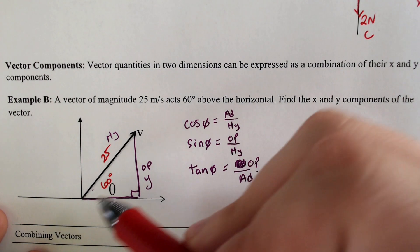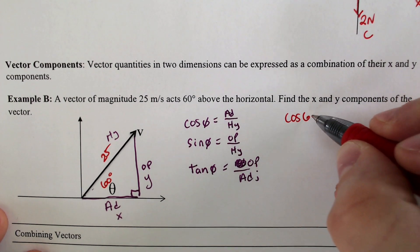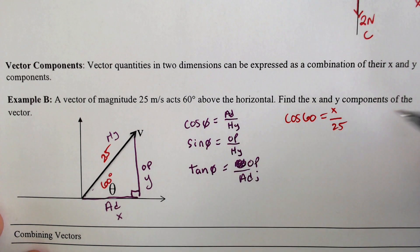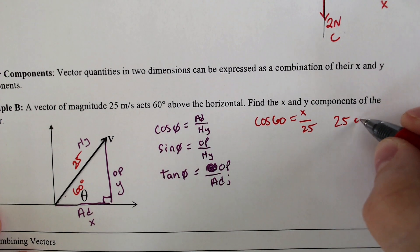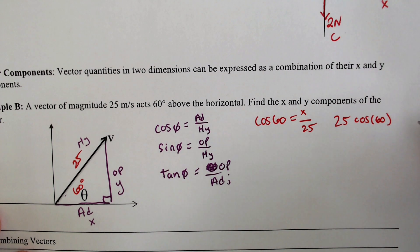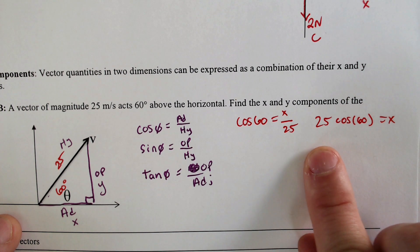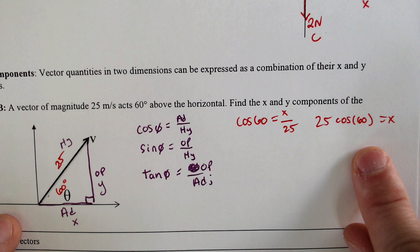So if we wanted to find the x component, we would need to do cosine of 60 would equal adjacent over hypotenuse, which ends up being multiply by 25, 25 cosine of 60, which tells you something. The x component is always the magnitude times the cosine of the angle. So the magnitude times the cosine of the angle.